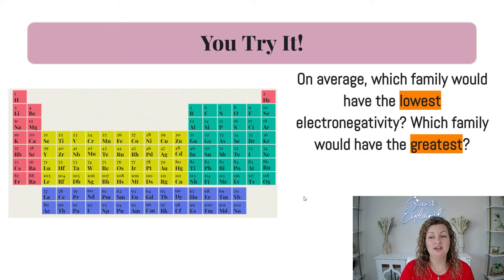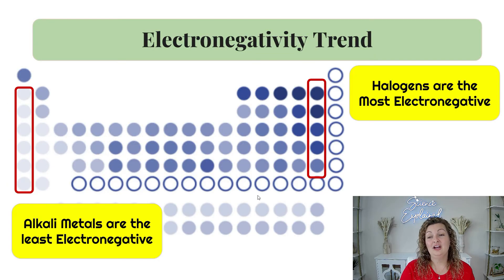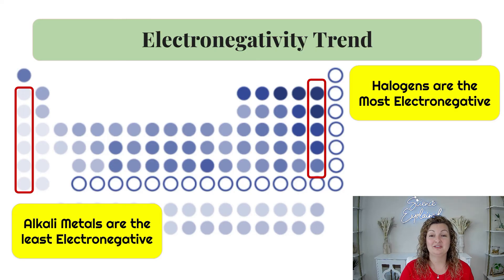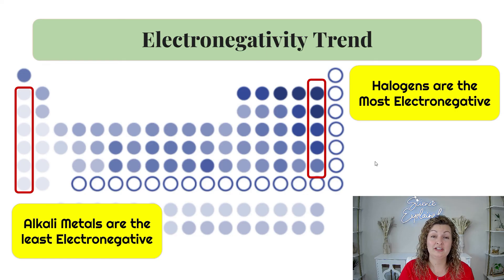On average, which family would have the lowest electronegativity and which family would have the greatest electronegativity? Our greatest electronegativity is, of course, going to be the halogens — they're going to want to accept that electron. For the lowest, the alkali metals have the least electronegativity of the families. However, it can be argued that it is the noble gases, because noble gases do not even have an electronegativity. You're going to need to see what your teacher puts on a test — some scientists call it zero, and some say it doesn't exist for noble gases. See which one they're using so you know the answers for your test.